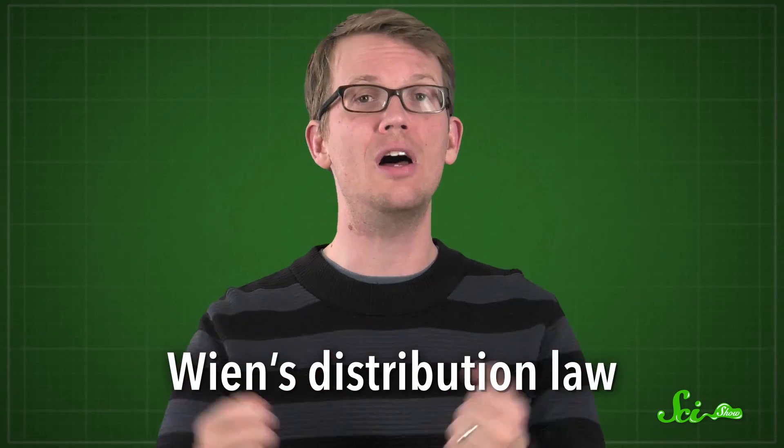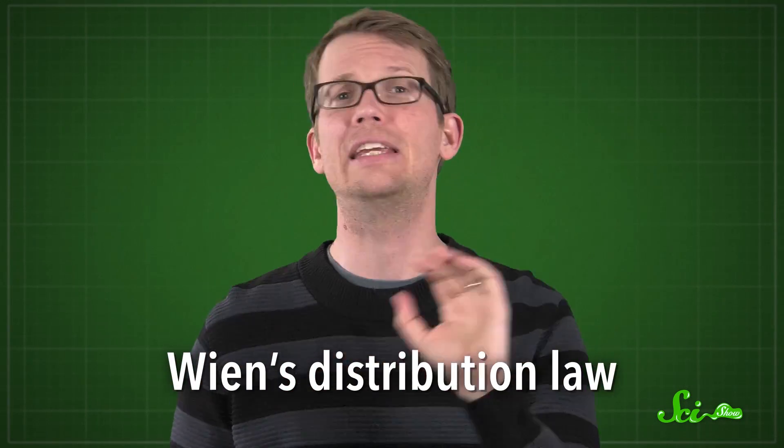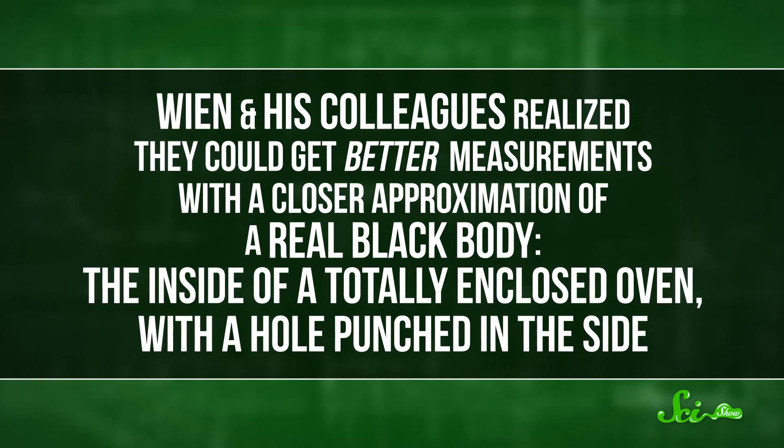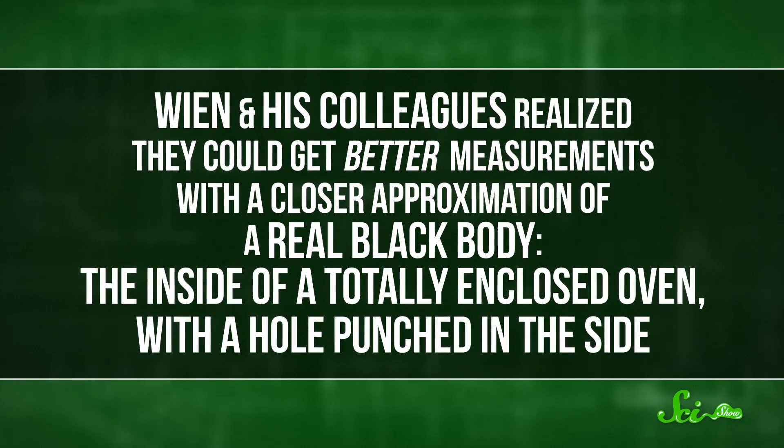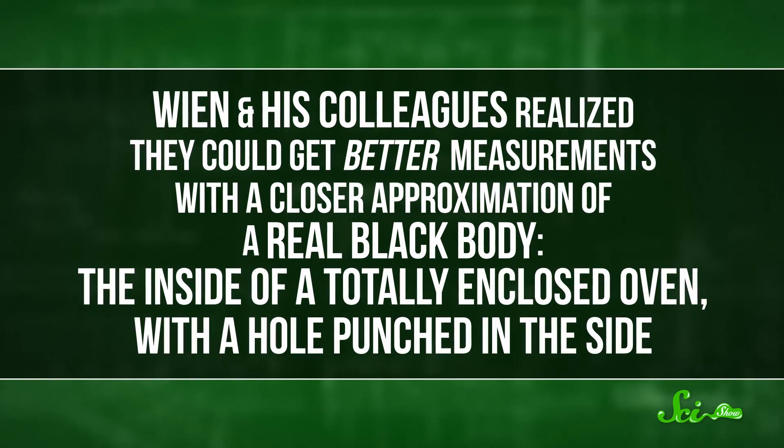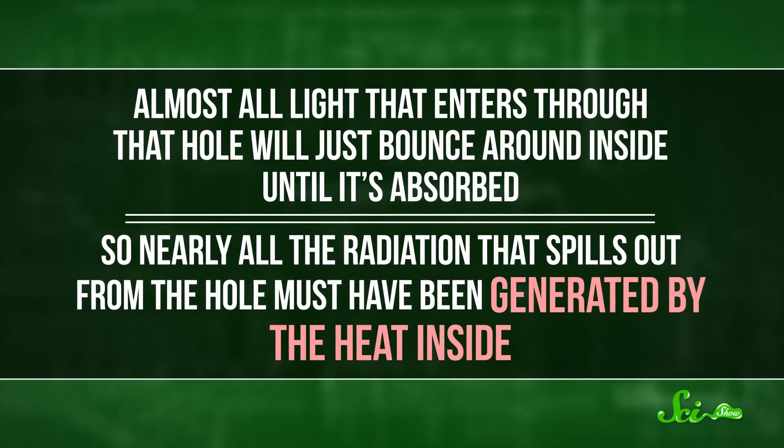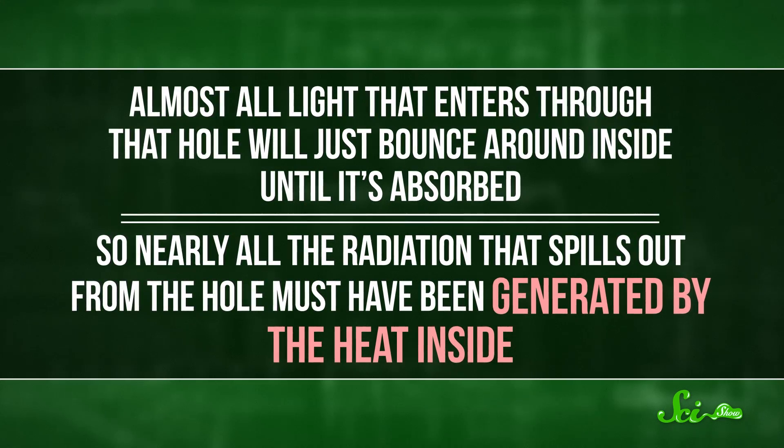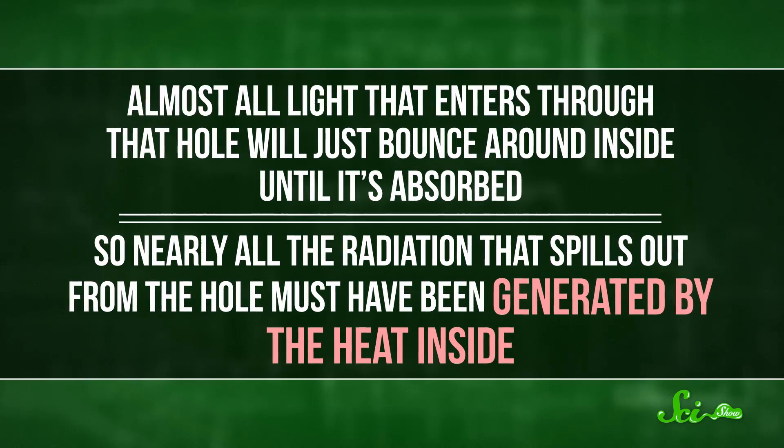By 1899, Wien's distribution law was looking really solid. He even won a Nobel Prize for his work in 1911. But there was a big catch. True black bodies don't exist. So all those nicely-behaved measurements of hunks of copper or containers of gas could have been messed up by complications from transmission and reflection. Wien and his colleagues realized they could get better measurements with a closer approximation of a real black body — the inside of a totally enclosed oven with a hole punched in the side. Almost all light that enters through that hole will just bounce around inside until it's absorbed, so nearly all of the radiation that spills out from that hole must have been generated by the heat inside.